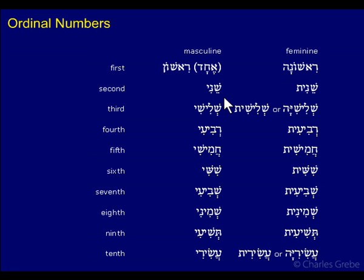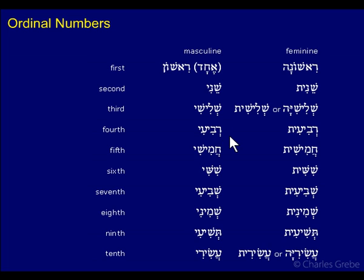For ordinals two through ten, in the masculine you have this 'i' ending — you can see it at the end and also in the middle after the second radical for many of them. So we have Sheini, Shelishi — you can see how these are built on the cardinals we looked at before, but they have this 'i' ending. Revi'i is a little different because the aleph is missing; arba is the cardinal starting with aleph, but in the ordinal it becomes Revi'i.